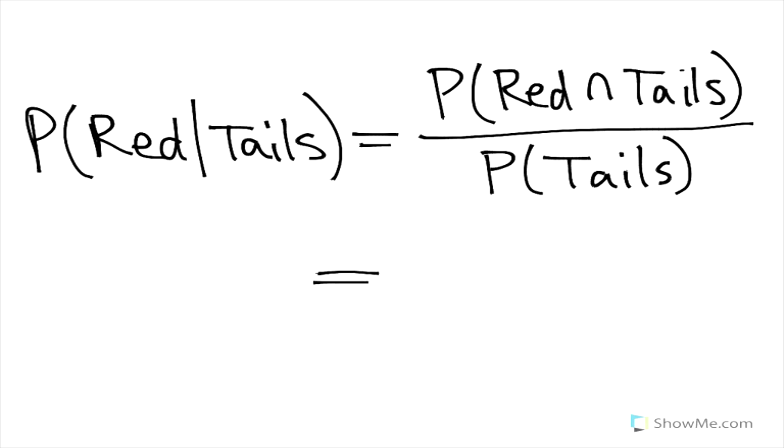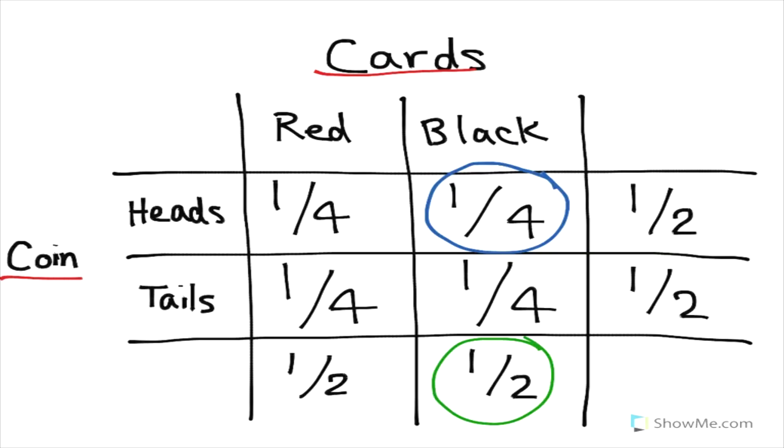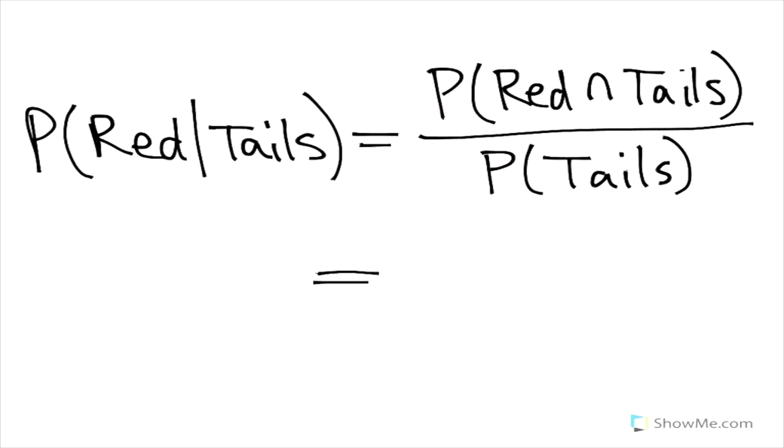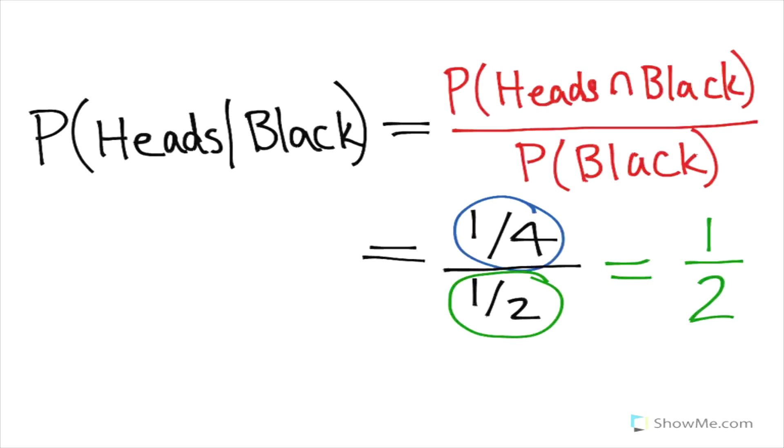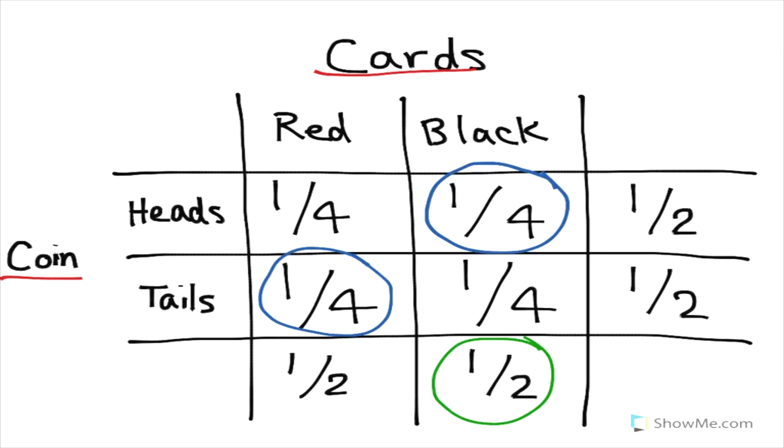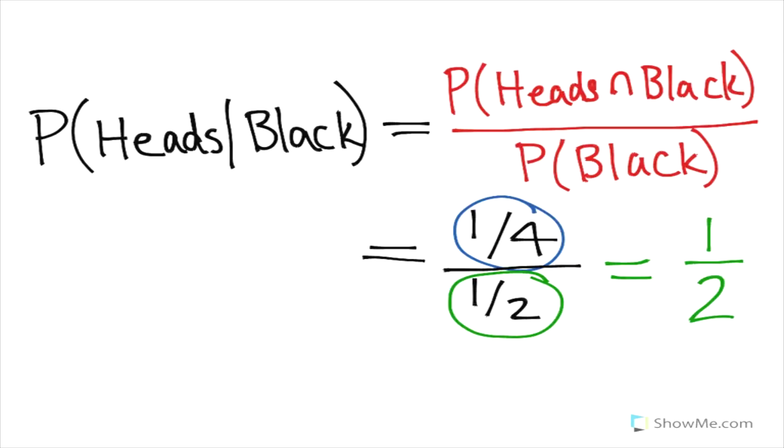If we go back to our table, the probability of drawing a red card and landing on tails is one-fourth. So that's our numerator. Then we need to find the probability of flipping a coin and landing on tails, which we know from our table is one-half.